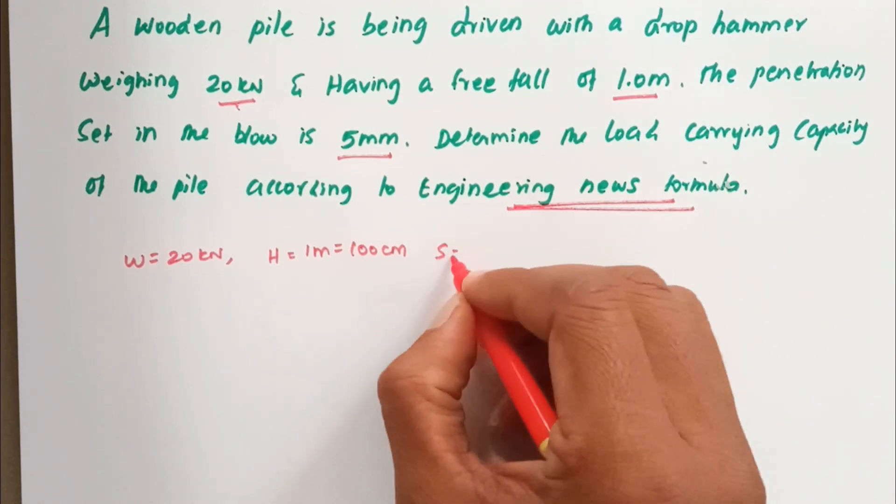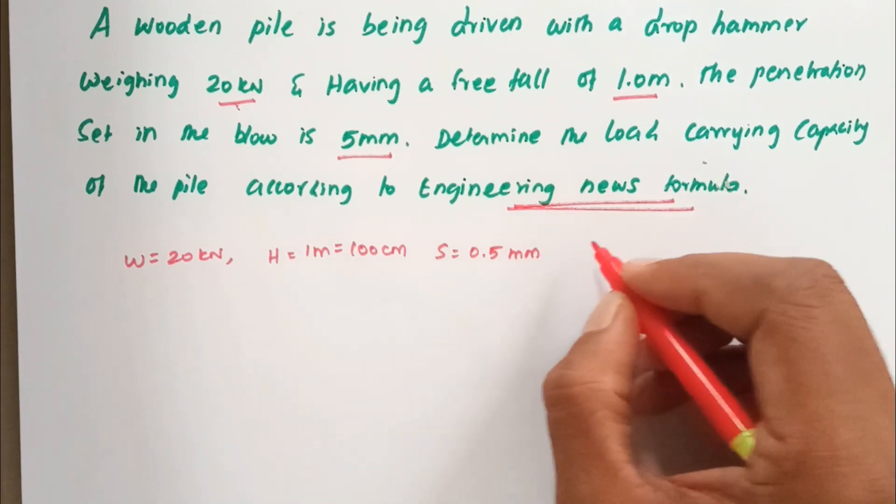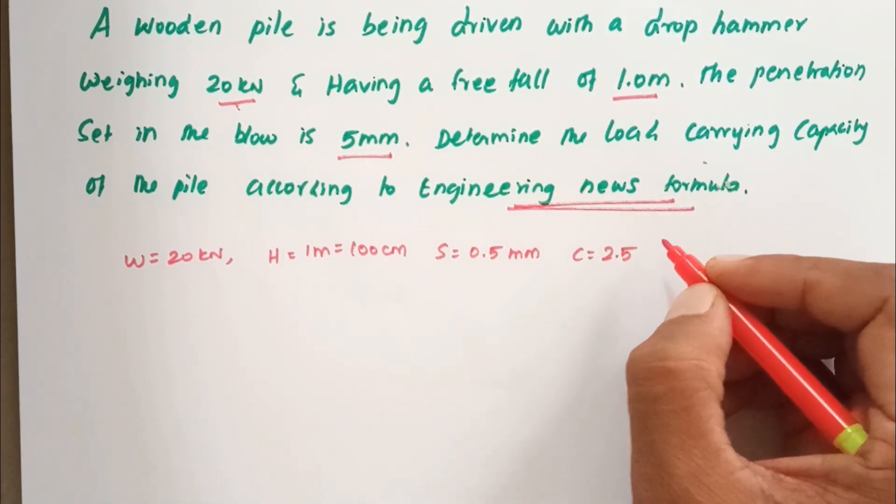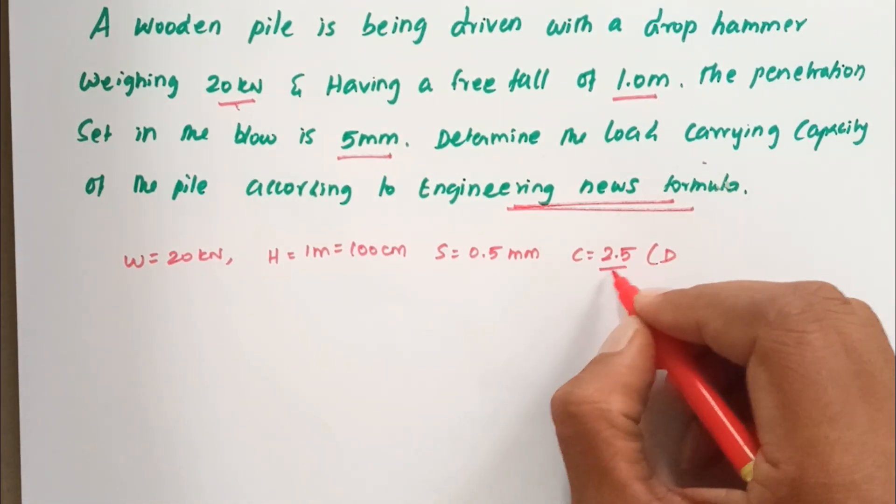S equals 0.5mm, then C equals 2.5. For drop hammer, we can use C equal to 2.5.